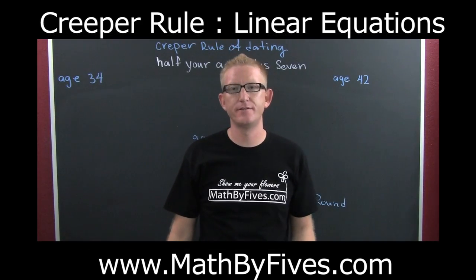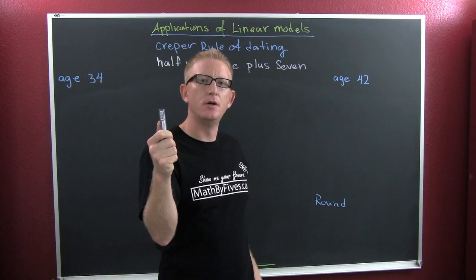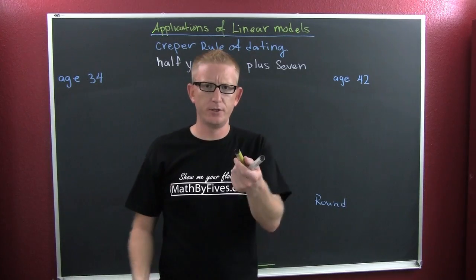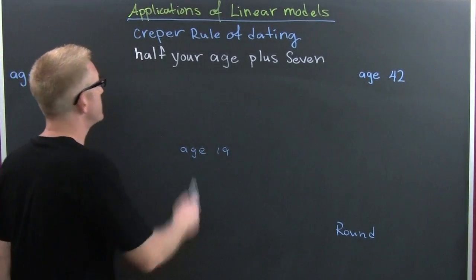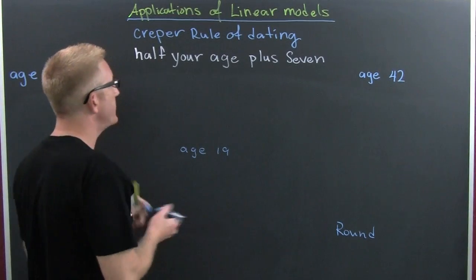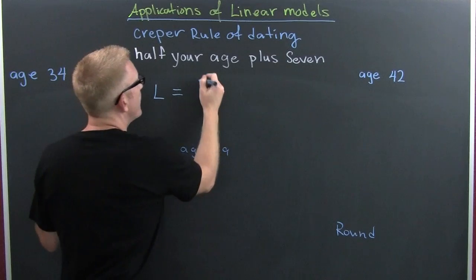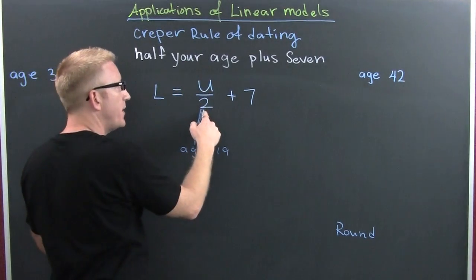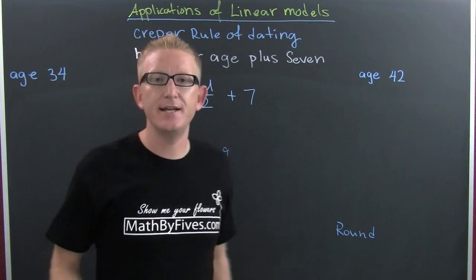Okay, I'm ready for an application of linear functions. I'm talking about the understood principle of the creeper rule for dating. I googled it, I looked it up, it must be true. What am I talking about? The socially acceptable dating age. It's supposed to be half your age plus seven. We need to translate that. The lower age is going to be equal to the upper age divided by two plus seven, or your age divided by two plus seven. This is the creeper rule for dating.